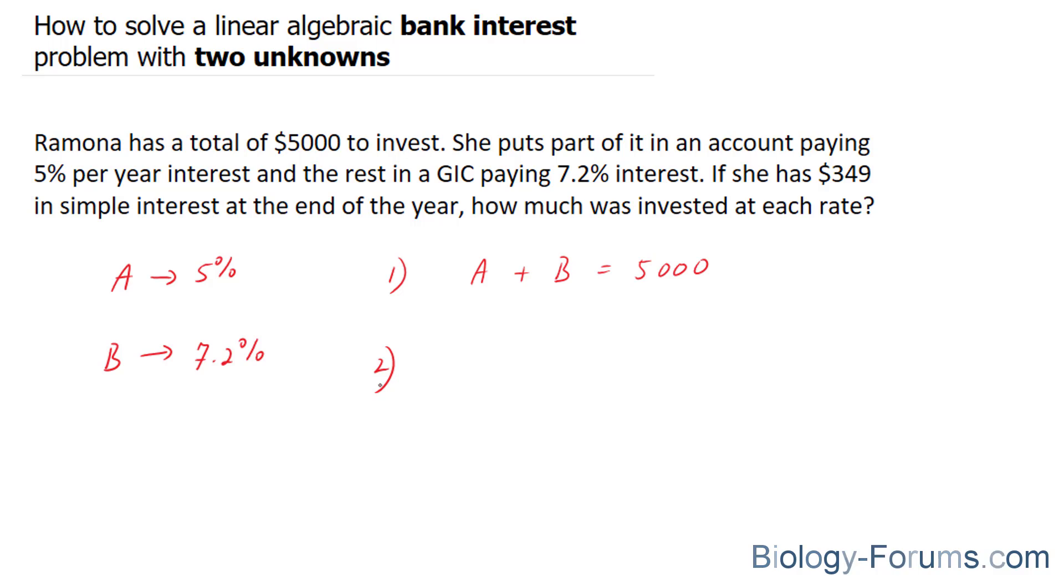The second formula we're going to create is one that relates the percentages and the money that she made at the end. So we know that A times 5%, and we're going to use the decimal version of 5%, so 0.05 plus B times the percentage of the second account, which is 0.072, is equal to a total of $349 that she made.